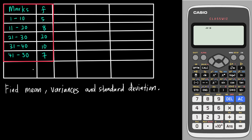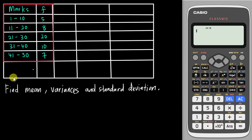Hi, this is another video sponsored by Casio Malaysia. In this video I will teach you how to find the mean, variance, and standard deviation using the new Casio 570EX calculator. In the exam you'll be given a table like this, which I've drawn using a red rectangle. I'm drawing a bigger table because I need to fill out other information so I can easily find the variance and standard deviation. I'll show you how to find all this manually, then using the calculator.